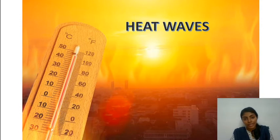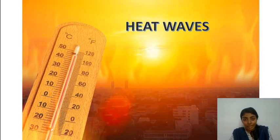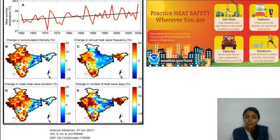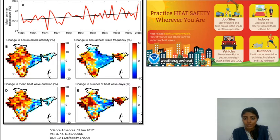Moving on to the next topic: heat waves. Our human body is adapted to a particular temperature and humidity, so prolonged exposure to heat can cause severe health issues, thermal strain, and even death. More than 10% of the Indian landmass is vulnerable to heat waves, and during summer — from March to July — there is an increase in normal temperature, and if there is an abnormal increase we may experience heat spells.